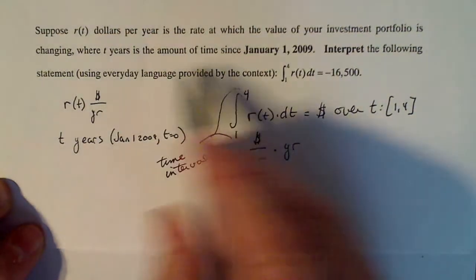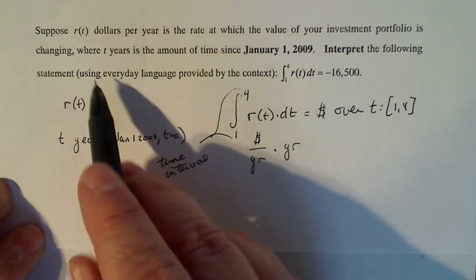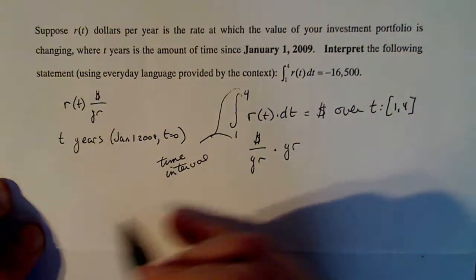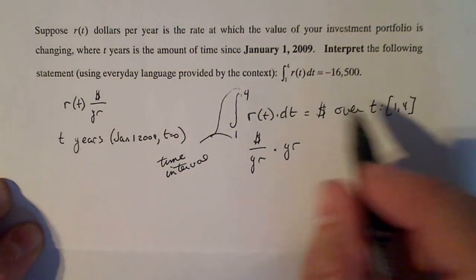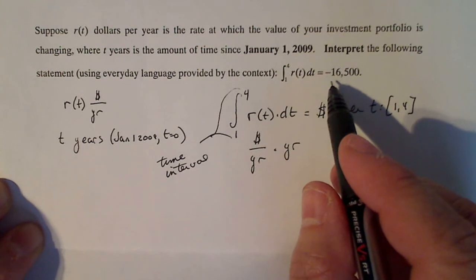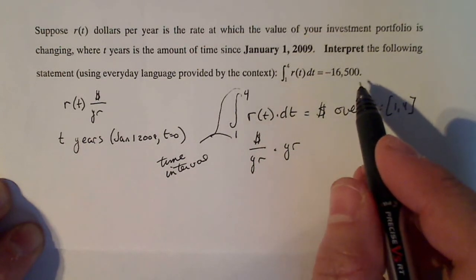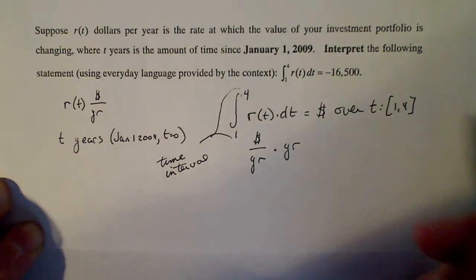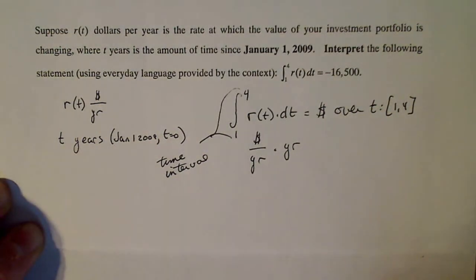What's the time element here for your portfolio? So from what date to what day is your portfolio losing 16,500 money? That's a lot of money. I'd get a new financial advisor in that case. But anyway, so we just have to think about how to say this.